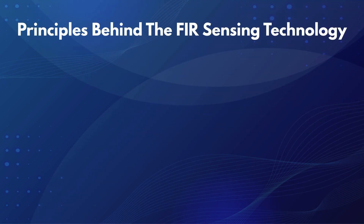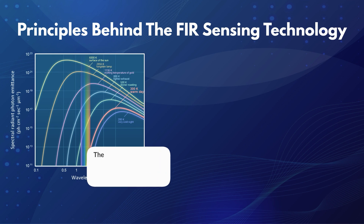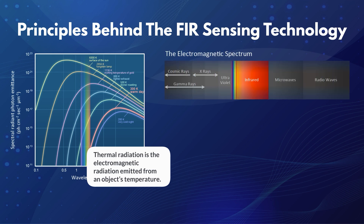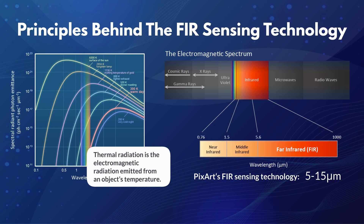So, what's the principle behind the FIR application? In general, the radiation wavelength that an object emits is determined by its temperature. Thermal radiation is the electromagnetic radiation emitted from an object's temperature. The wavelength of a human body generally falls within approximately 5.6 to 1,000 micrometers, commonly known as the far-infrared wavelength range. PixArt's far-infrared sensing technology is designed to detect far-infrared heat radiation with a wavelength between 5 micrometers to 15 micrometers.